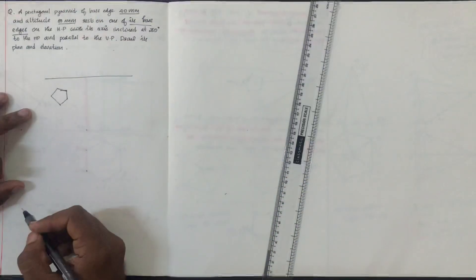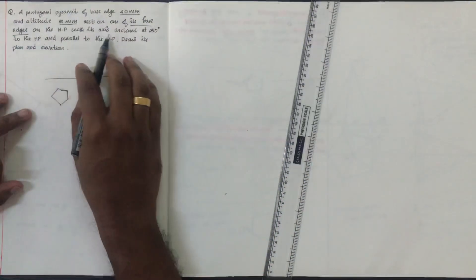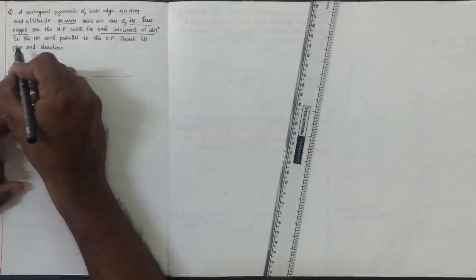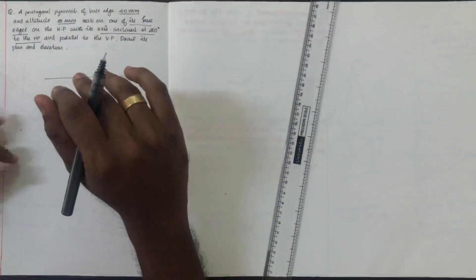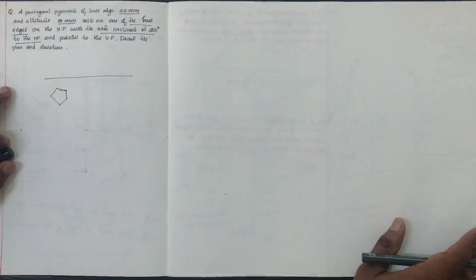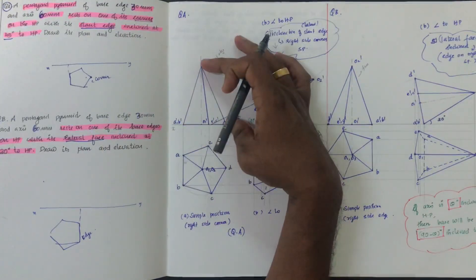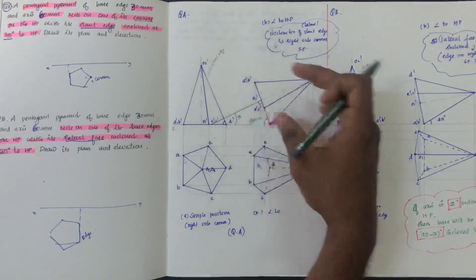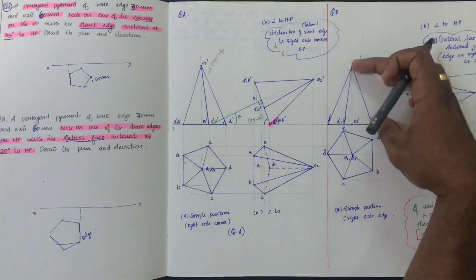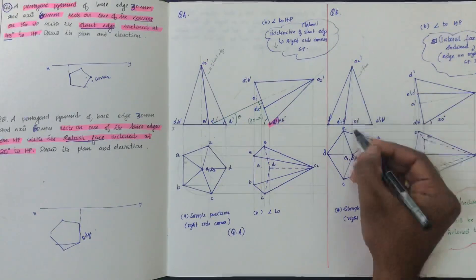It's a pentagonal pyramid with its axis and inclination into HP. First, we consider the axis and inclination.